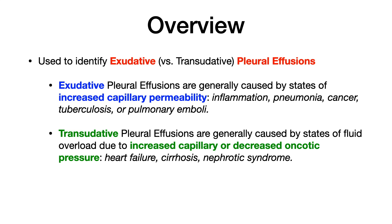For the sake of simplicity, I want you to think of exudative as extra stuff — exudative equals extra. If a pleural effusion is exudative, there's extra stuff in it. Exudative pleural effusions are caused by states of increased capillary permeability. Some examples of disease states that cause increased capillary permeability include any type of inflammation, pneumonia, cancer, TB, or pulmonary emboli.